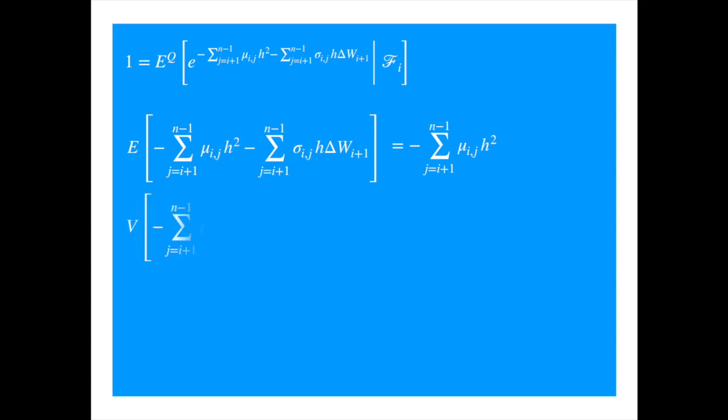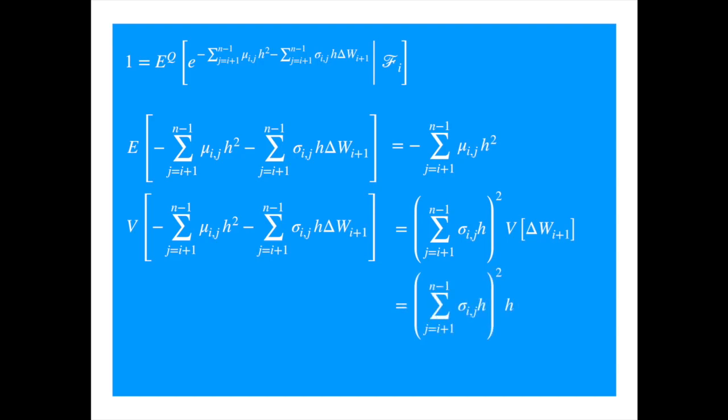For variance, we know the variance of the Brownian increments over an interval is equal to the length of the interval, so we get.